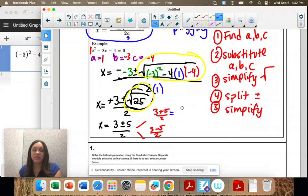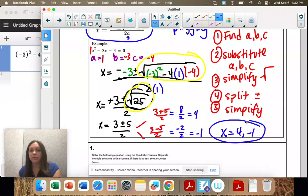And then fifth step is to simplify your fractions. So 3 plus 5 is 8 over 2, which is 4. 3 minus 5 is negative 2 over 2, which is negative 1. So x equals 4 and negative 1 would be our answers to this.